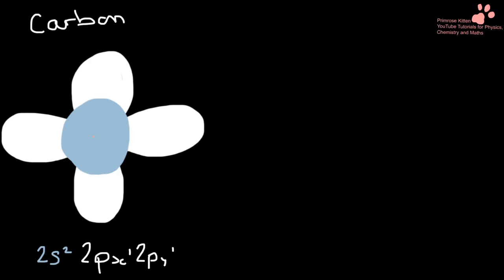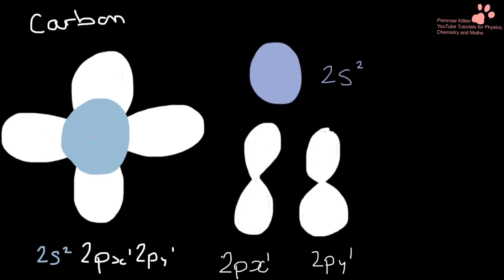If we take a second to look at the shape of the orbitals that we have in carbon, we have our 2s2 orbitals, the two electrons in there, our p orbital, and our second p orbital. If we separate them out, you can see our sphere and our two dumbbell shapes for the shapes of the orbitals.